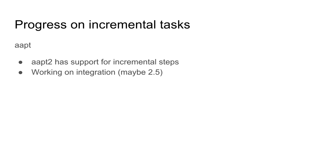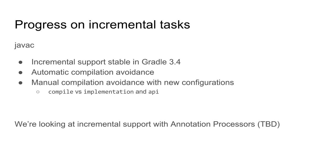APT is currently not incremental. There's a new tool called APT2 that has some support for incremental processing. We are planning on integrating it — we're not sure exactly when, but it's definitely on the roadmap. For JavaC, you've seen all the improvements coming: compilation avoidance and more.